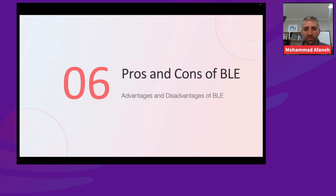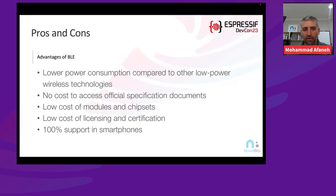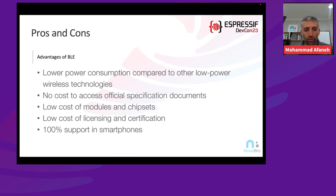Let's look at the advantages of BLE. It has lower power consumption even compared to other low-power wireless technologies. There's no cost to access the official specification documents — unlike some competitor technologies that require paid membership. With Bluetooth, the full spec is available online for free. There's also low cost of modules and chipsets, which continues to decrease, low cost of licensing and certification, and 100% support in smartphones — no other low-power technology can compete with that.